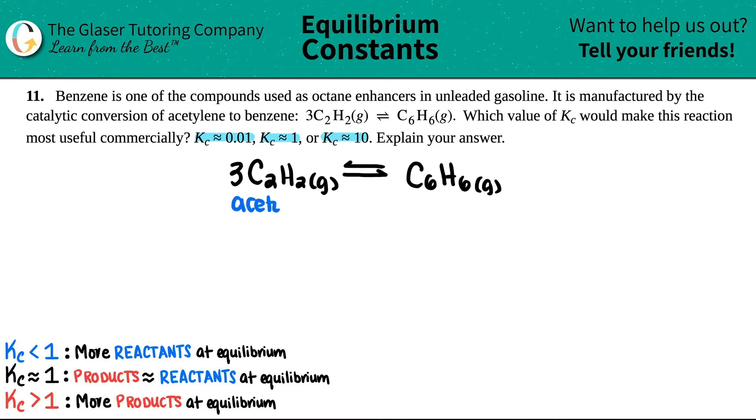And then I got the benzene over here, C6H6. And I know that these are the two of them. It says it's manufactured by the catalytic conversion of acetylene to benzene.